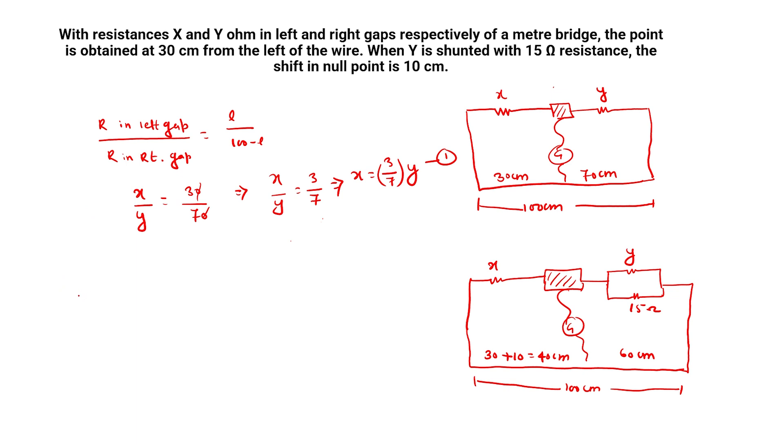Sister's shunted parallel combination. For parallel combination, one by R equivalent equals to 1 by Y plus 1 by 15, equals to 15 plus Y by 15Y ohm. Therefore R equivalent is 15Y by 15 plus Y. Now the resistance. What is the formula?